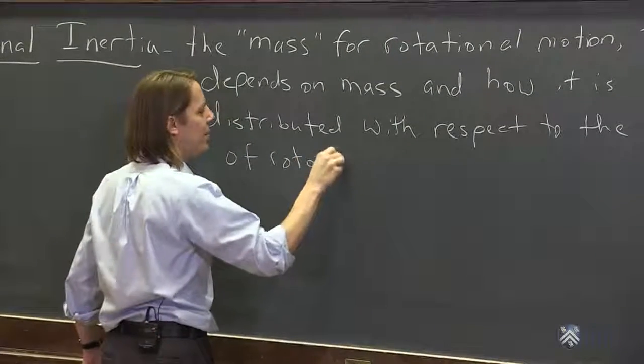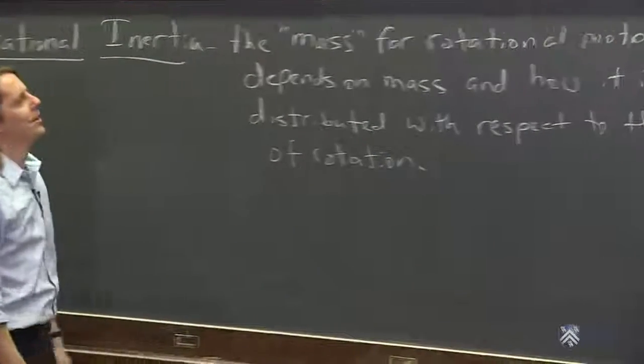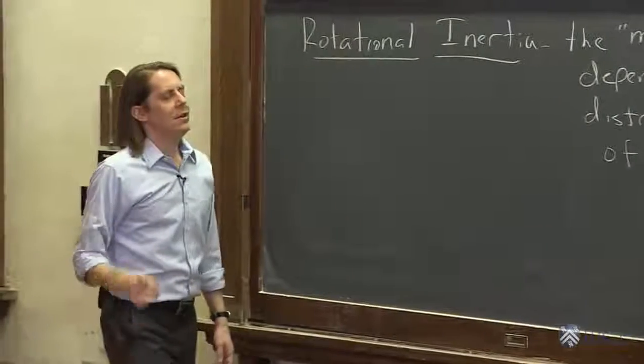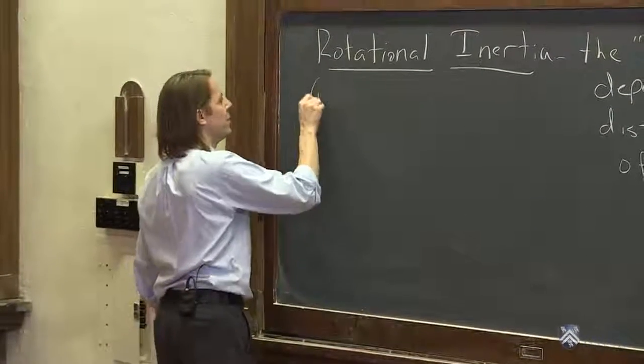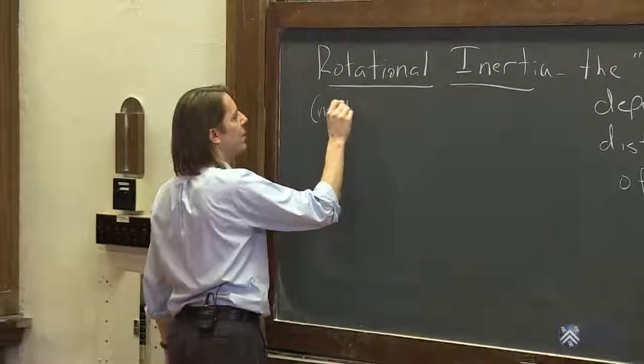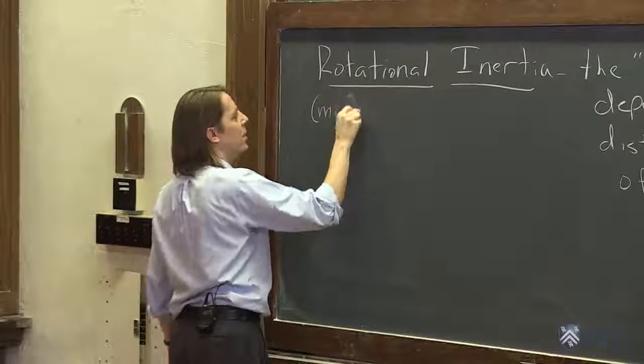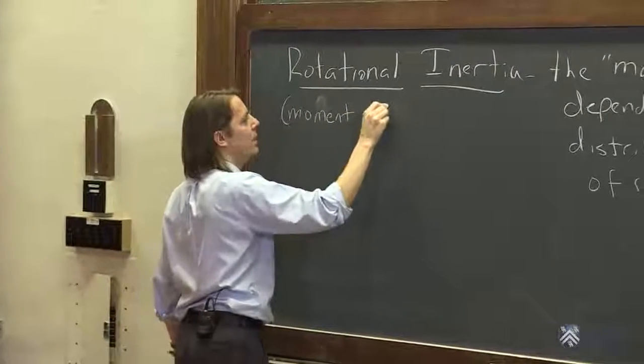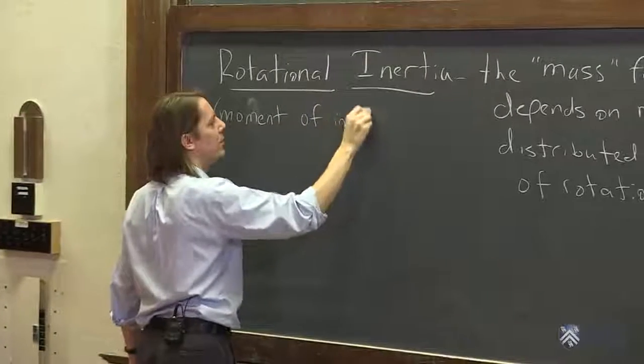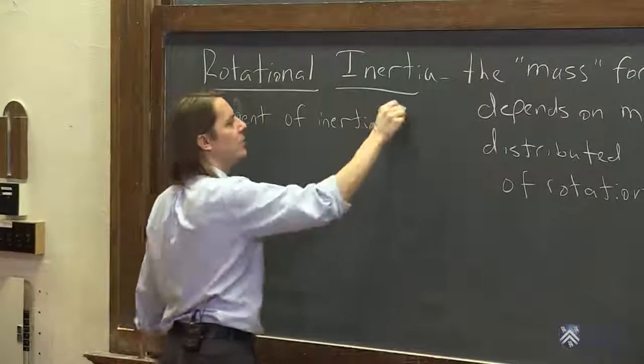Its street name is moment of inertia. So College Board likes rotational inertia, which you'll see it referred to as the moment of inertia often. And the symbol is big I.